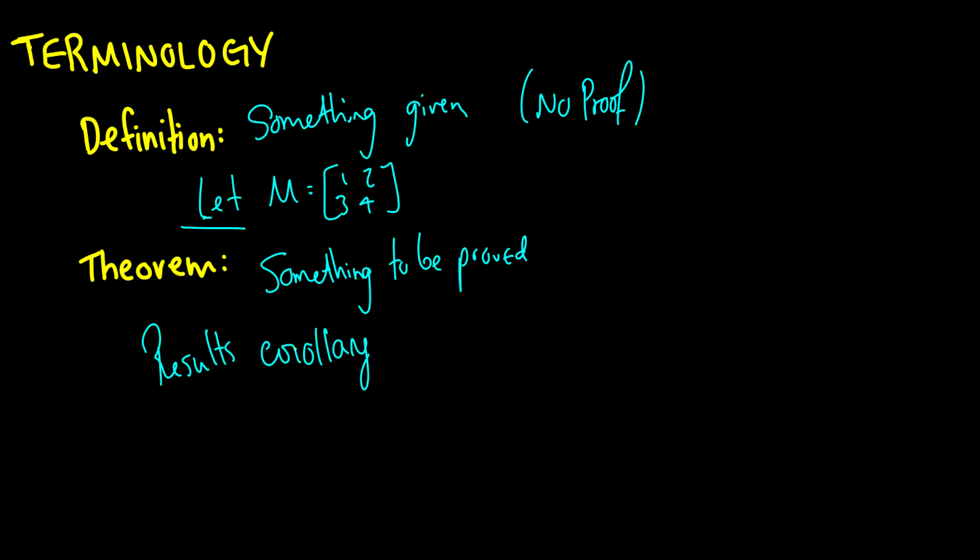And what these are, these just happen to be little things that come about because the theorem is true. So if I have a theorem that says all numbers are either odd or even, the corollary is that any number divisible by 2 is going to be even. So that's a little corollary kind of thing.